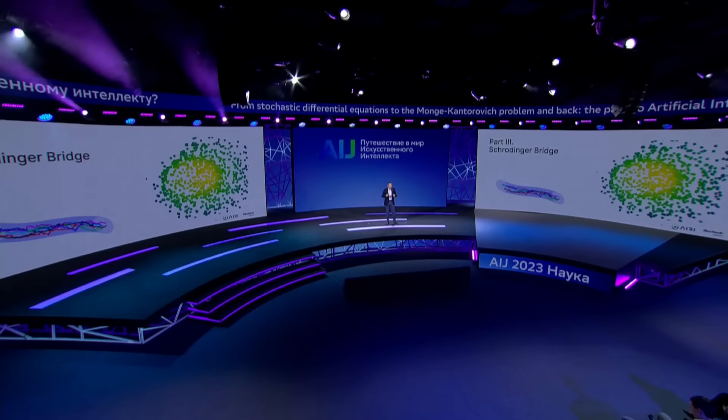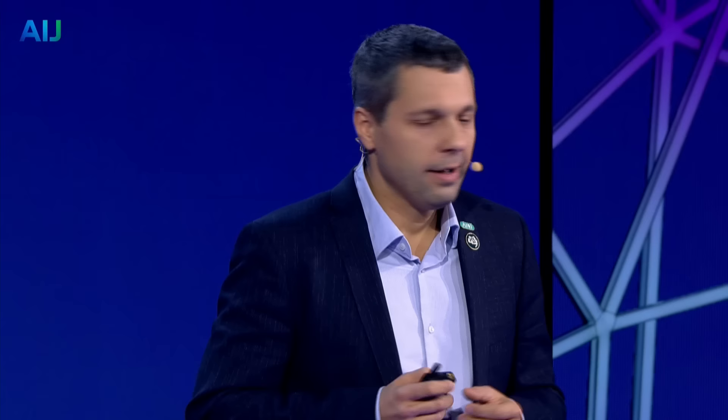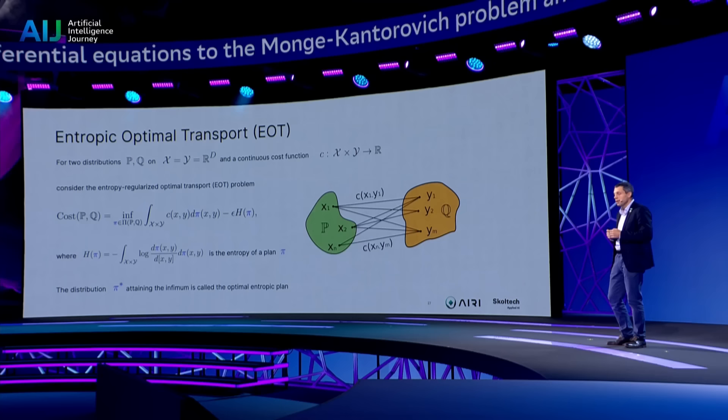We see that optimal transport can help formulate a strict task for a GAN model, and you can have new attributes as well. How are the two worlds of diffusion models and GAN-based models connected? There is a theoretical structure called the Schrödinger Bridge — not a physical bridge, but a specific mathematical construct. Before diving into that, let me say a bit more about optimal transport.